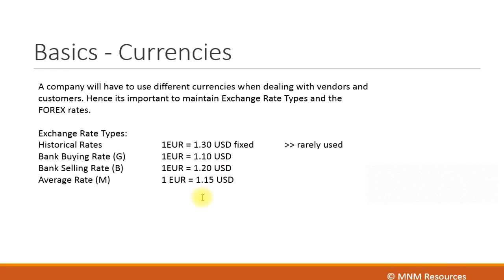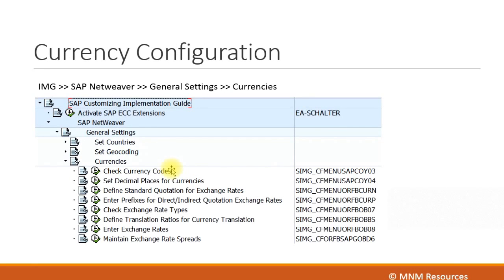The most commonly used exchange rate type in SAP and the recommended one is the average rate. It is denoted by the letter M, whereas the buying rate is denoted by G and the selling rate by B. The average rate is calculated by adding up the buying rate and selling rate and dividing by two. For example, if the two rates add up to two dollars and thirty cents, the average rate is one dollar and fifteen cents.